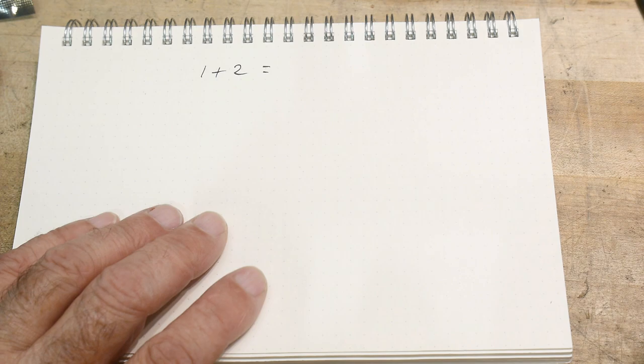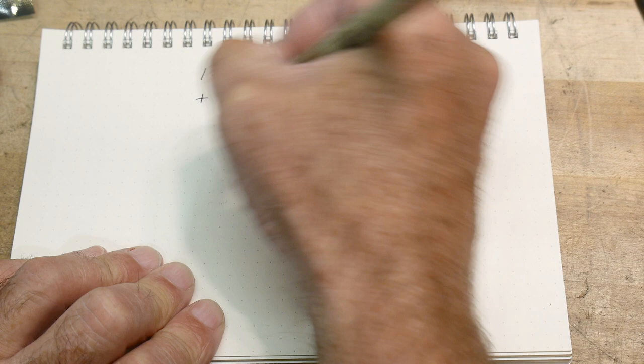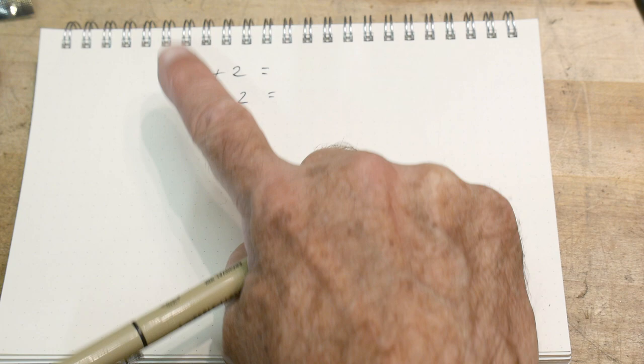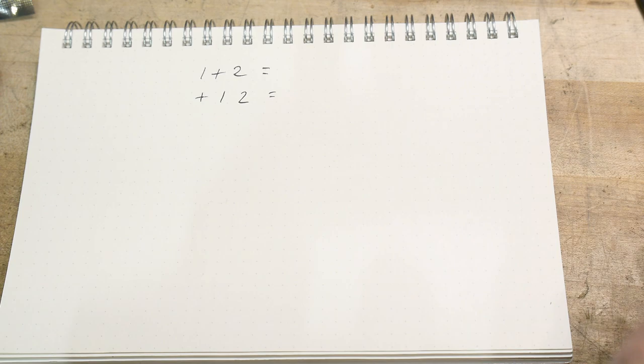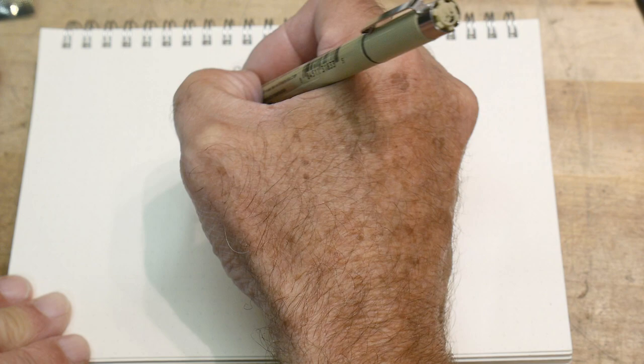And this is called infix notation. There's something called Polish notation, which you would write as plus 1, 2 equals. And this would say you're going to be doing a plus operator on these two numbers. So you put the operator out front. That's Polish notation.